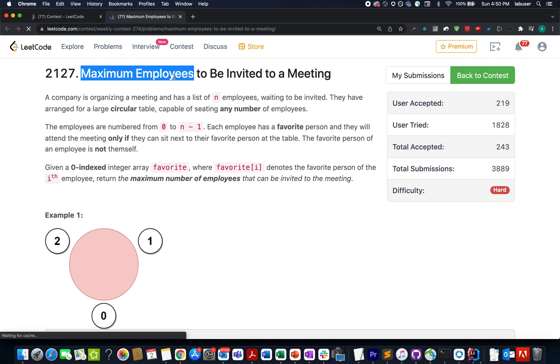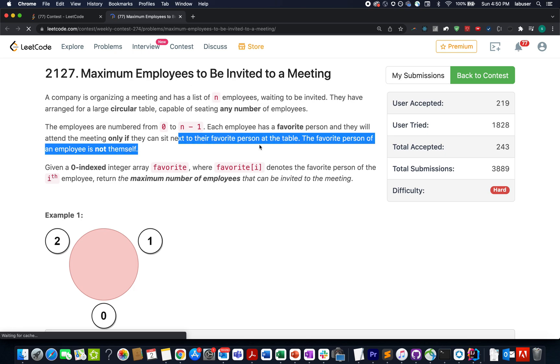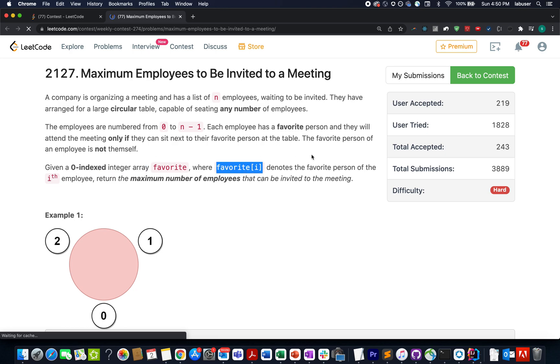The question is maximum employees to be invited to a meeting. A company is organizing a meeting and has a list of employees waiting to be invited. Each employee has a favorite employee and can only attend if they sit next to their favorite at the table. The favorite employee can't be himself. Given a zero-indexed array favorites where favorite[i] denotes the favorite person of the ith employee, identify the maximum number of employees that can be invited.